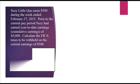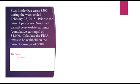Susie Little Q earns $500 during the week ended February 27, 2015. Prior to the current pay period, Susie had year-to-date cumulative earnings of $4,000. Calculate the five taxes to be withheld on the current earnings of $500. She gets paid weekly — $500 — and year-to-date earnings prior to this paycheck are $4,000.